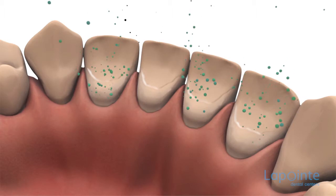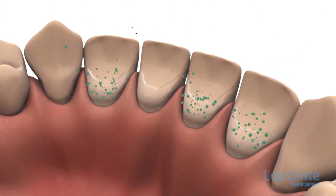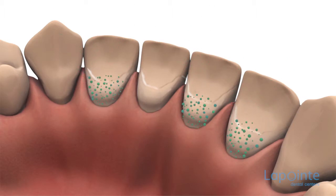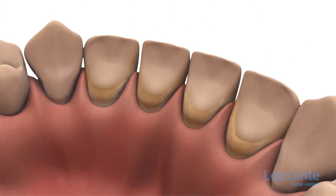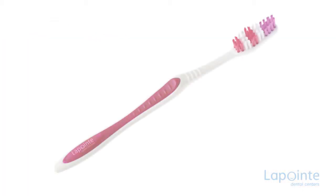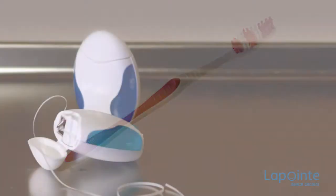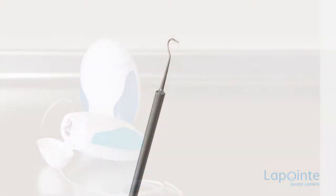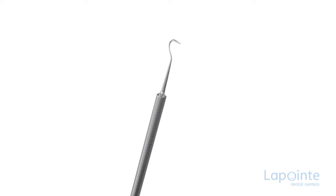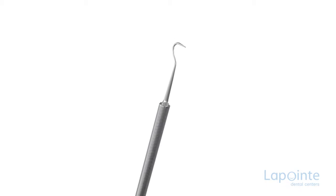Calcium and phosphorus present in saliva adhere to the plaque. This is how a coat of tartar forms. Solidly attached, it is now too late to dislodge it with a toothbrush or dental floss. Only the instrument used by the hygienist can remove tartar from the teeth.